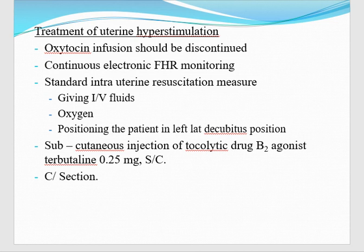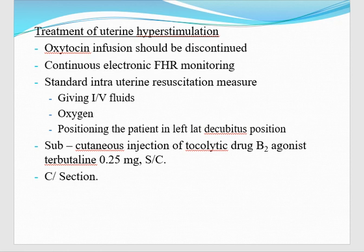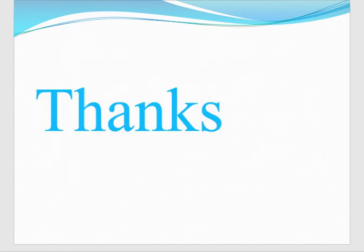Treatment of uterine hyperstimulation during induction: first, if oxytocin is started, we should discontinue it. Then monitor the fetal heart by continuous electronic monitoring. Standard intrauterine resuscitation measures — give IV fluids, give oxygen, change position to left lateral. If there is still more contraction, use subcutaneous injection of tocolytic drug — beta-2 agonist terbutaline 0.25 mg subcutaneously. Meanwhile, prepare for cesarean section and deliver the baby. Thank you.